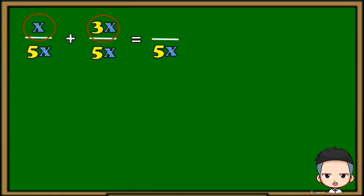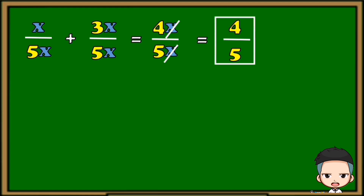The sum of x over 5x gives us 4x. Now since we have x on the numerator and x on the denominator, we can cancel out those two x's, leaving us with 4 over 5. And that will be our final answer.